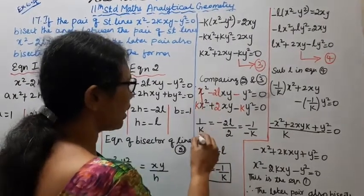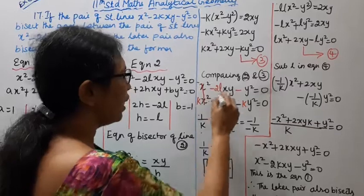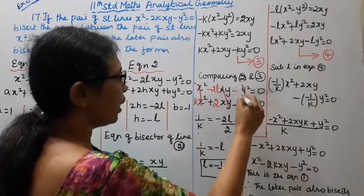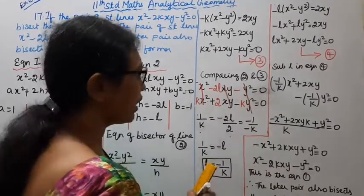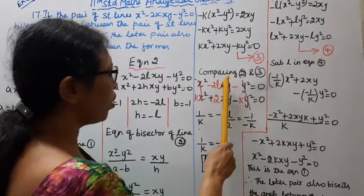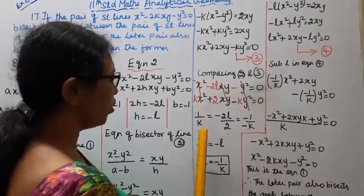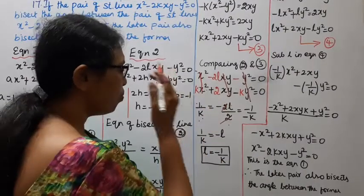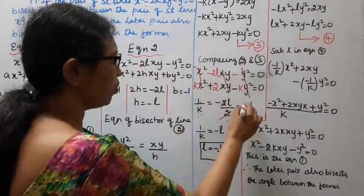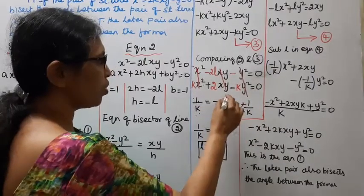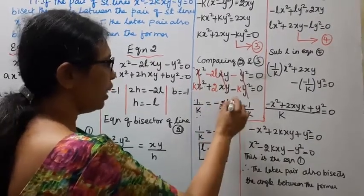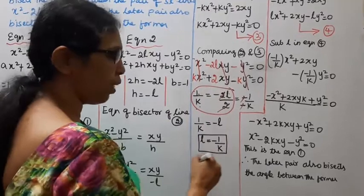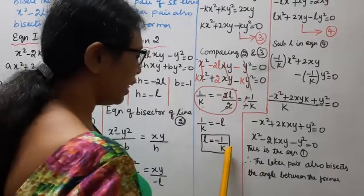Comparing equations 2 and 3 by matching coefficients of x², xy, and y²: for x²: 1/k; for xy: the coefficient gives -2l = 2/k; for y²: -1 equals -1/k. From the xy coefficients: 1/k = -l, so l = -1/k.